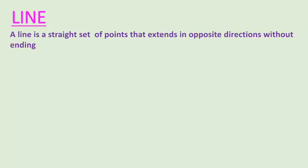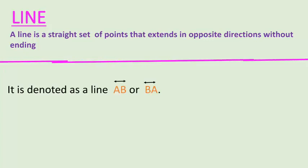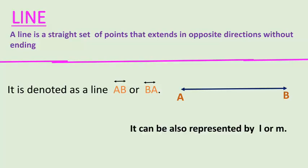A line is a straight set of points which is extended in opposite directions without ending. As you can see in the figure, we have a straight set of points which is extended in opposite directions and will not end. If we have a line drawn and marked as AB, we can denote it as line AB or line BA. We can also represent any line by a small letter l or m.